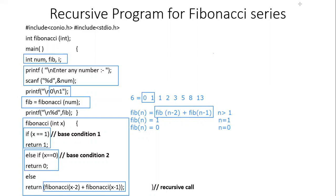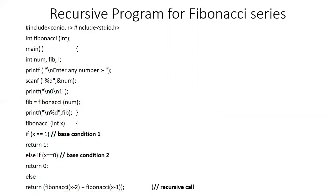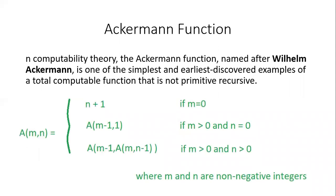The next problem is the Ackermann Function. In Computability Theory, the Ackermann Function, named after Willem Ackermann, is one of the simplest and earliest discovered examples of a total computable function that is non-primitive recursive. At the bottom, the mathematical model of the Ackermann Function is given.